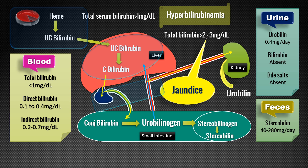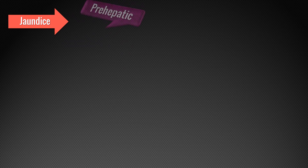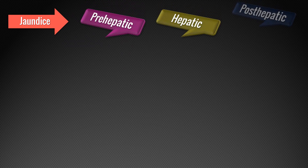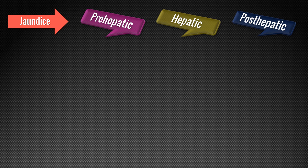So we now know the three main reasons: hemolysis, inability to conjugate within the liver, or obstruction. Based on these three reasons we classify jaundice into pre-hepatic (also called hemolytic), hepatic (also called hepatocellular), and post-hepatic (also known as obstructive jaundice).